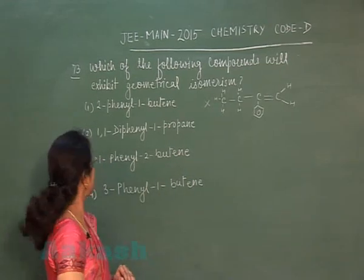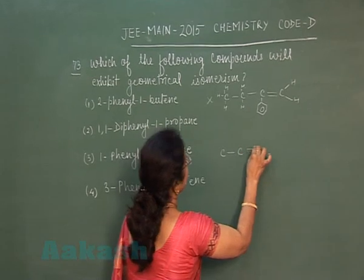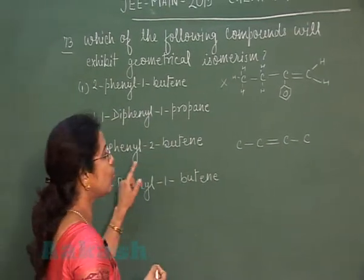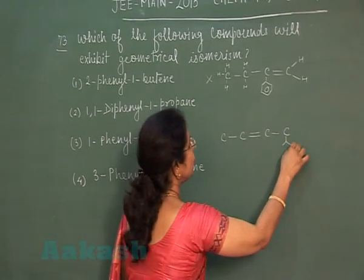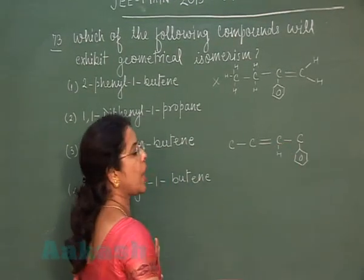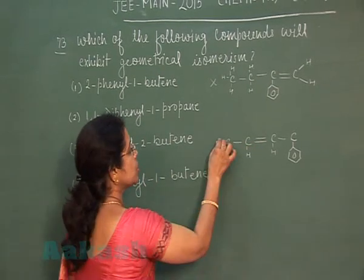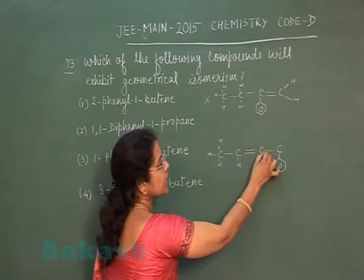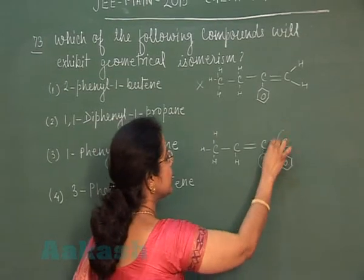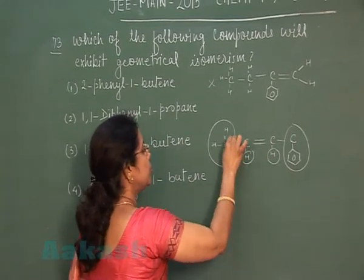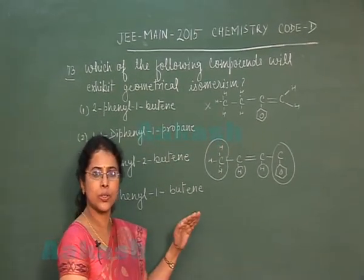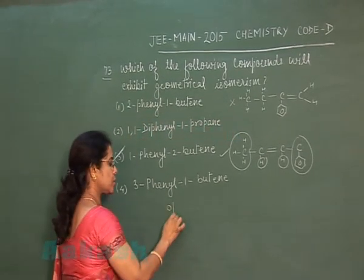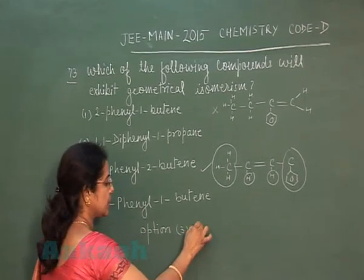Now for the third option — 1-phenyl-2-butene. This is but-2-ene with a double bond between the 2nd and 3rd carbons, and a phenyl group at the 1st carbon. The second double-bonded carbon is bonded to a hydrogen atom, and the first double-bonded carbon is bonded to two different groups. Both double-bonded carbons are attached to two different groups, so the condition for geometrical isomerism is satisfied. This compound will show geometrical isomerism. Option 3 is correct.